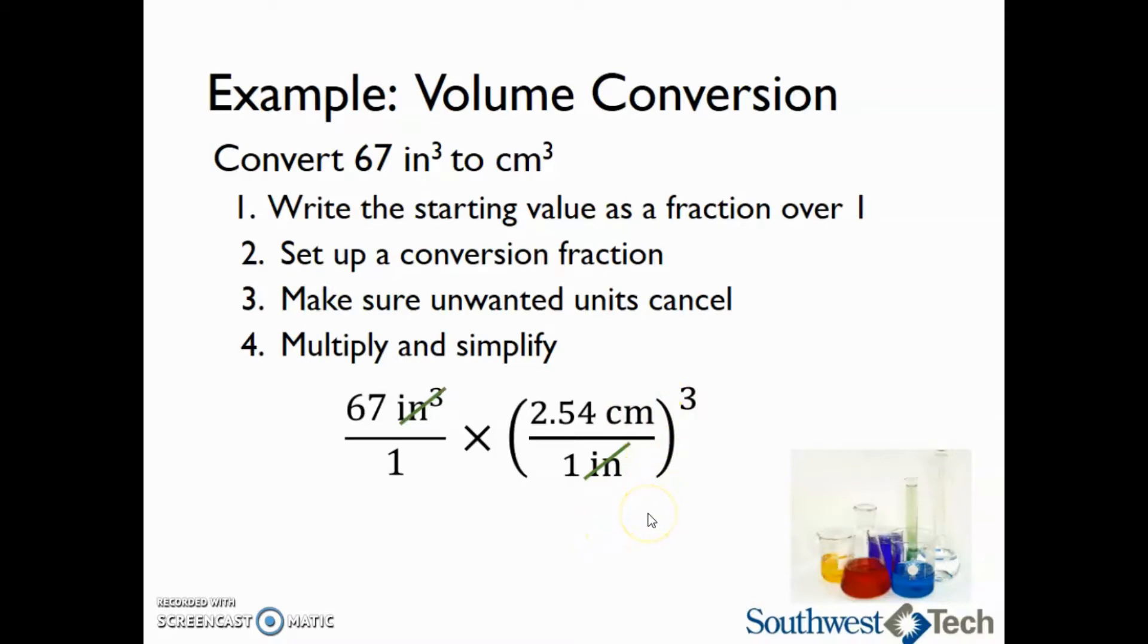So all that's left to do is multiply and simplify. So when we're multiplying, we're going to take 67 times 2.54 cubed. Now, don't forget to cube the 2.54, otherwise we won't end up with a correct answer. So when we do this, we should end up with 1,098 cubic inches. This concludes our second lecture on unit conversion.